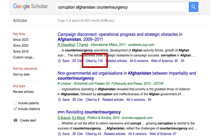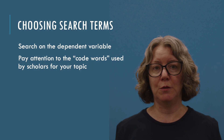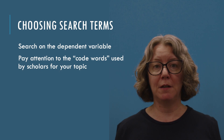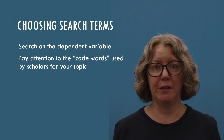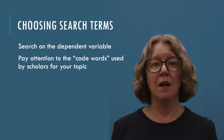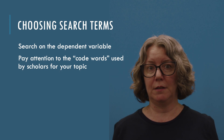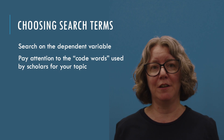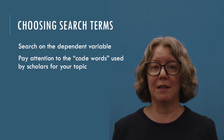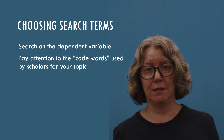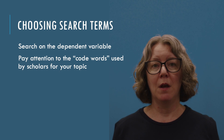The last thing I want to note is how to choose search terms. First, remember to search primarily on your dependent variable — this is what you need to find alternate explanations for, and it tends to produce better results than searching on every word in your hypothesis. So if your hypothesis is "as training increases, police violence decreases," search primarily on the causes of excessive use of force by police, not on types of training for police. Second, take advantage of the fact that academic language is specific. If you want to understand how effective a government agency is, some scholars call this "state capacity" while others call it "bureaucratic effectiveness." Look for these academic code words in the articles you read and try searching on them — they will often pull up a narrower, more relevant range of sources.